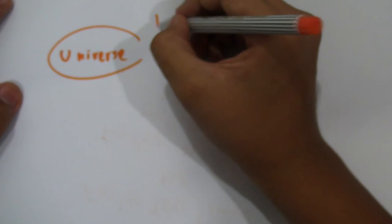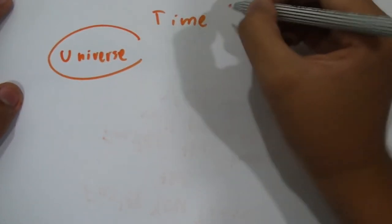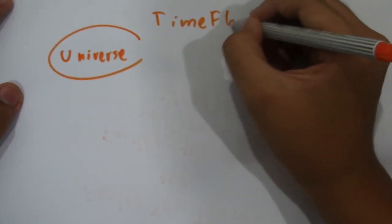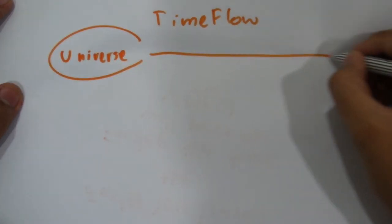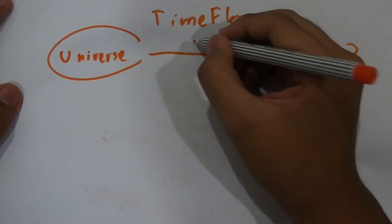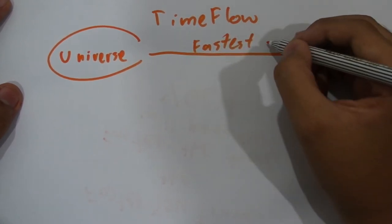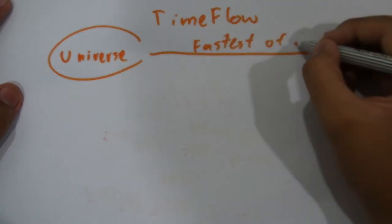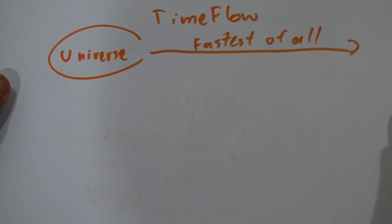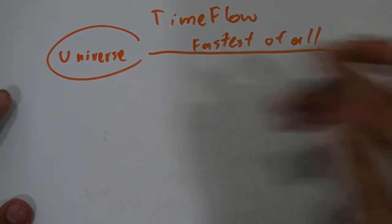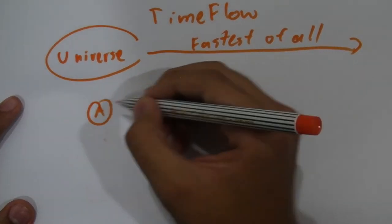The fastest time flow possible is the time flow of the universe itself, as we eliminate all the factors like mass and speed out. And for object A, the speed of it will affect its time flow and make its time flow more slowly than the universe. And for object B, which has gravity affecting on it, so the time flow of it is slowing too.